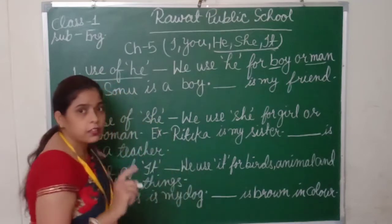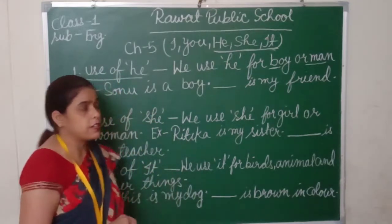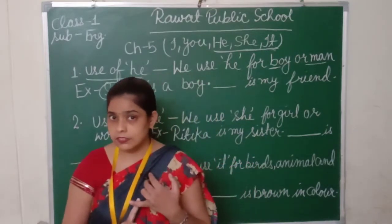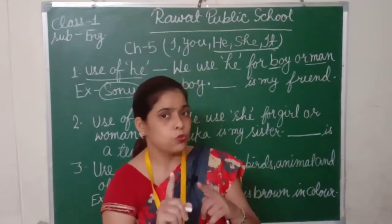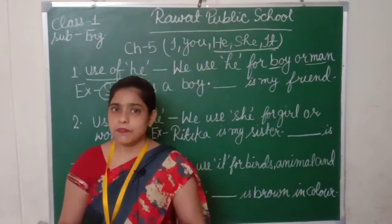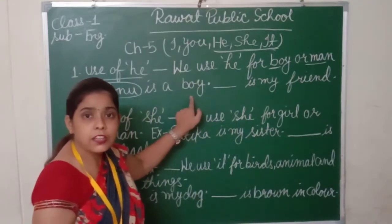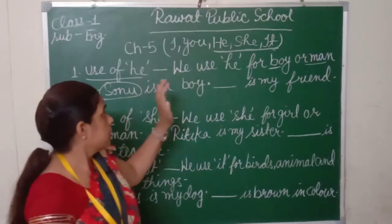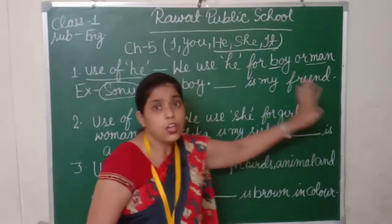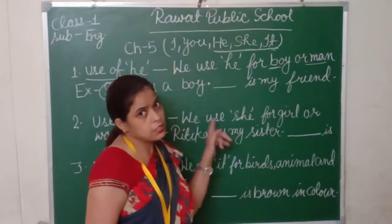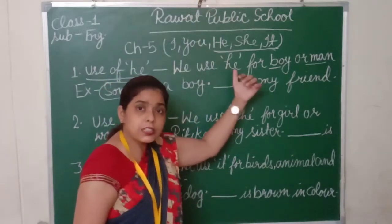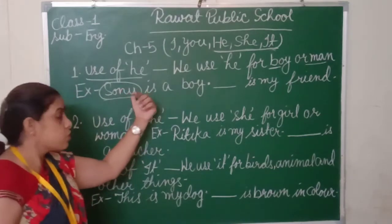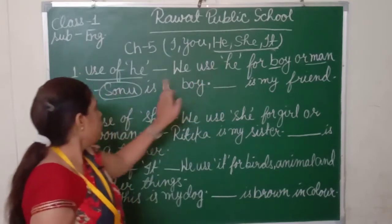So here I am giving one example. Sonu is a boy. Look carefully — Sonu is a naming word because Sonu is the name of a boy. Since we use he for boys or men, we use he for Sonu.